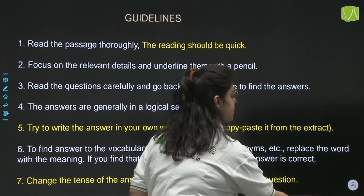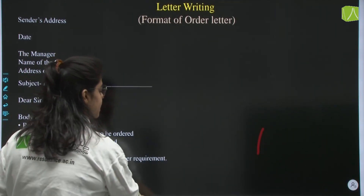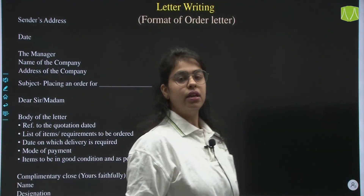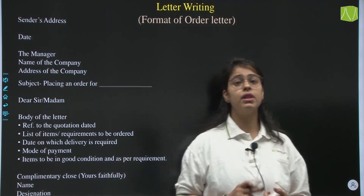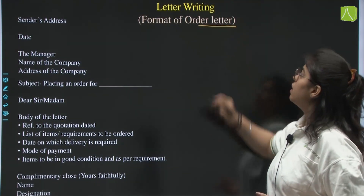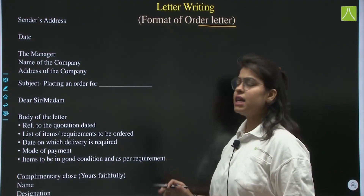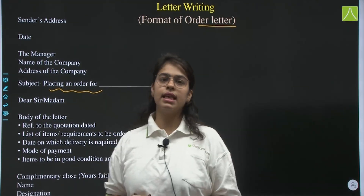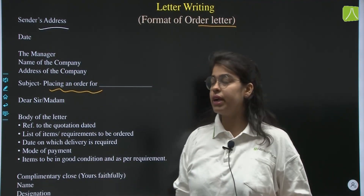Next is letter writing. After doing the analytical paragraph, you will move to letter writing. There are two or possibly three types of letters you may be asked to write — the order letter, the cancellation of order letter, or the enquiry letter. First, let us see the order letter. The sender's address comes first — this may or may not be given in the question, but you are not allowed to write your own personal address.